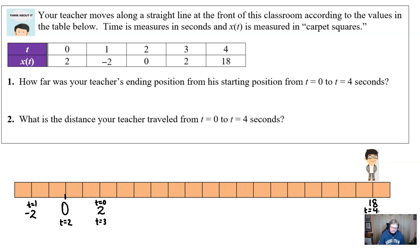So the first question. How far was your teacher's ending position from the starting position? Well, if you take the starting position to the ending position 18, and you find out how far is it from there to there, the answer is simply 16 squares. And you can get that by simply subtracting 18 minus two.